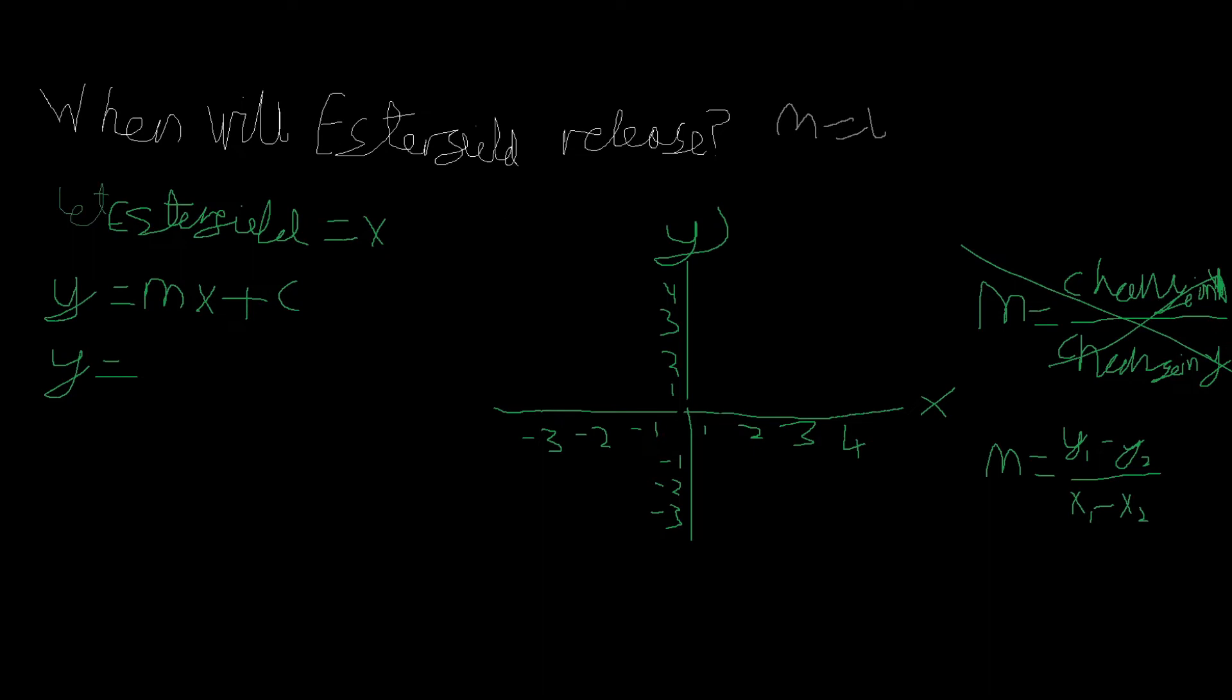What can we figure out? So y equals the change in x over the change in y. So the change in x, or x1 negative x2, is equal to x negative 2021, which is the year.